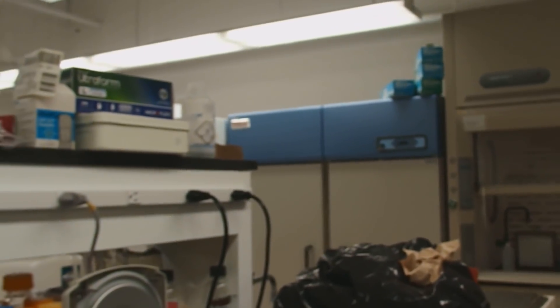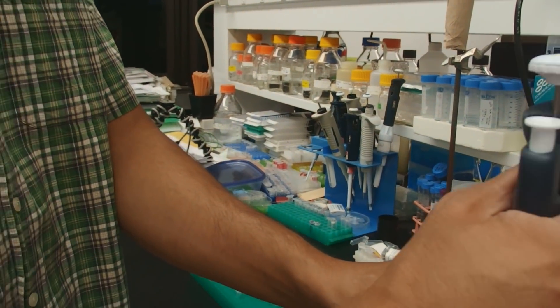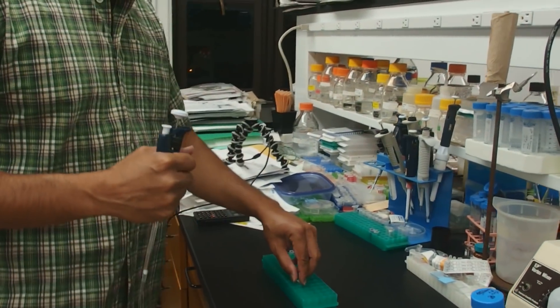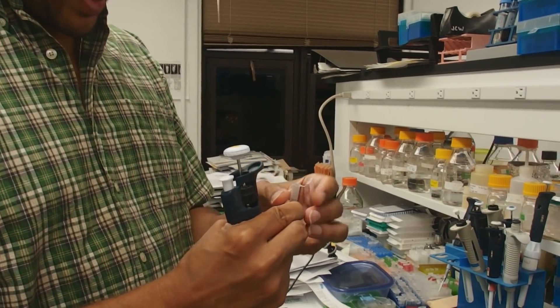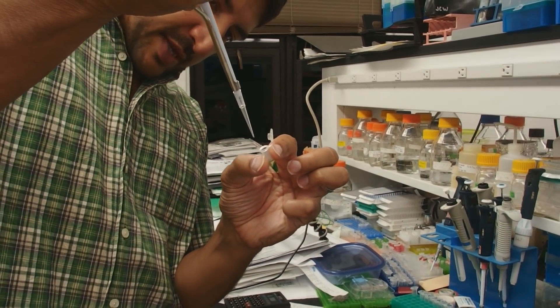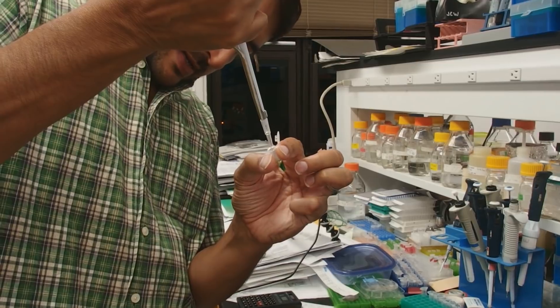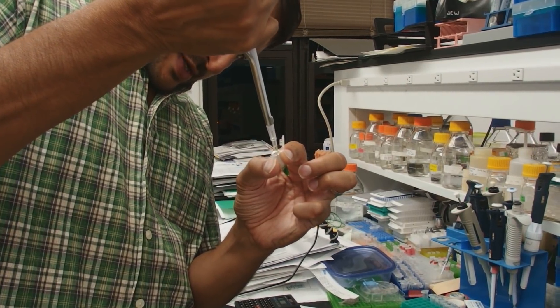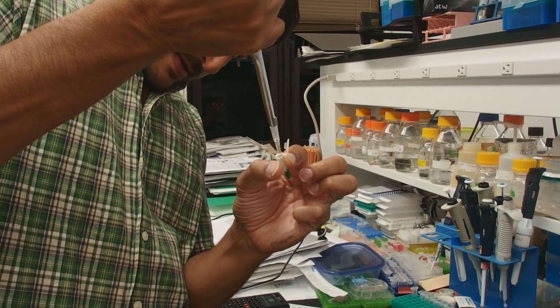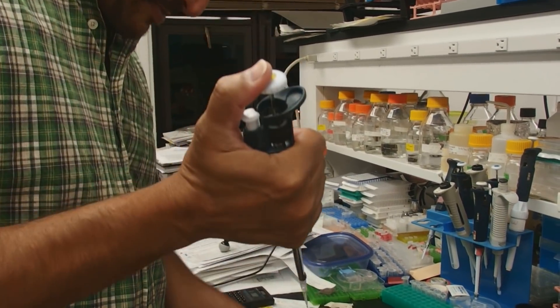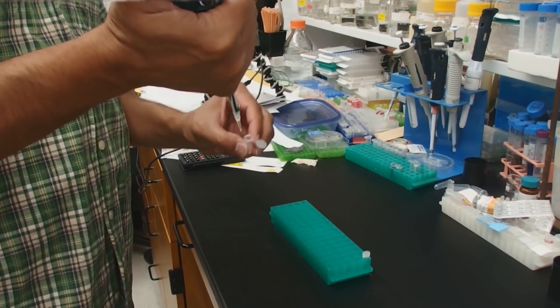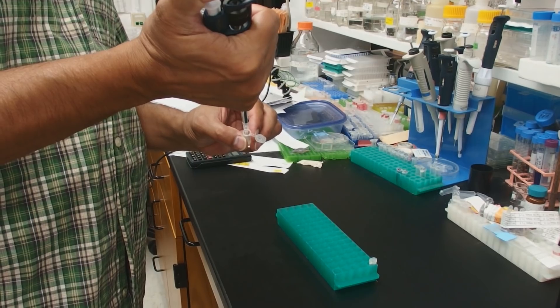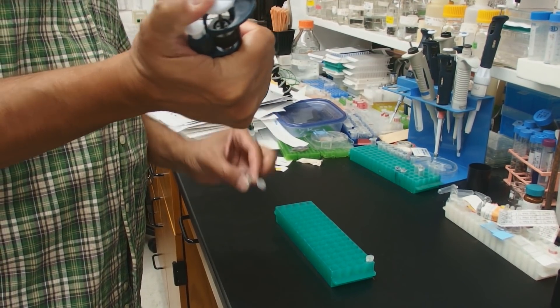We want to take that upper aqueous phase and put it in a new tube. You'll usually get a little bit less liquid than you started with, so whatever CTAB you started with, you'll probably get a little bit less than that. And we really don't want to take any of the interphase. It's better to leave a little bit of stuff behind than it is to be greedy.